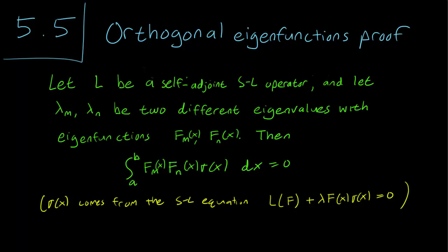This is a generalization of that, and it shows that this idea applies to any eigenfunctions, not just the sines and cosines. Remember that sigma(x) comes from the Sturm-Liouville equation: L(f) + lambda * f(x) * sigma(x) = 0. That's where that comes from.